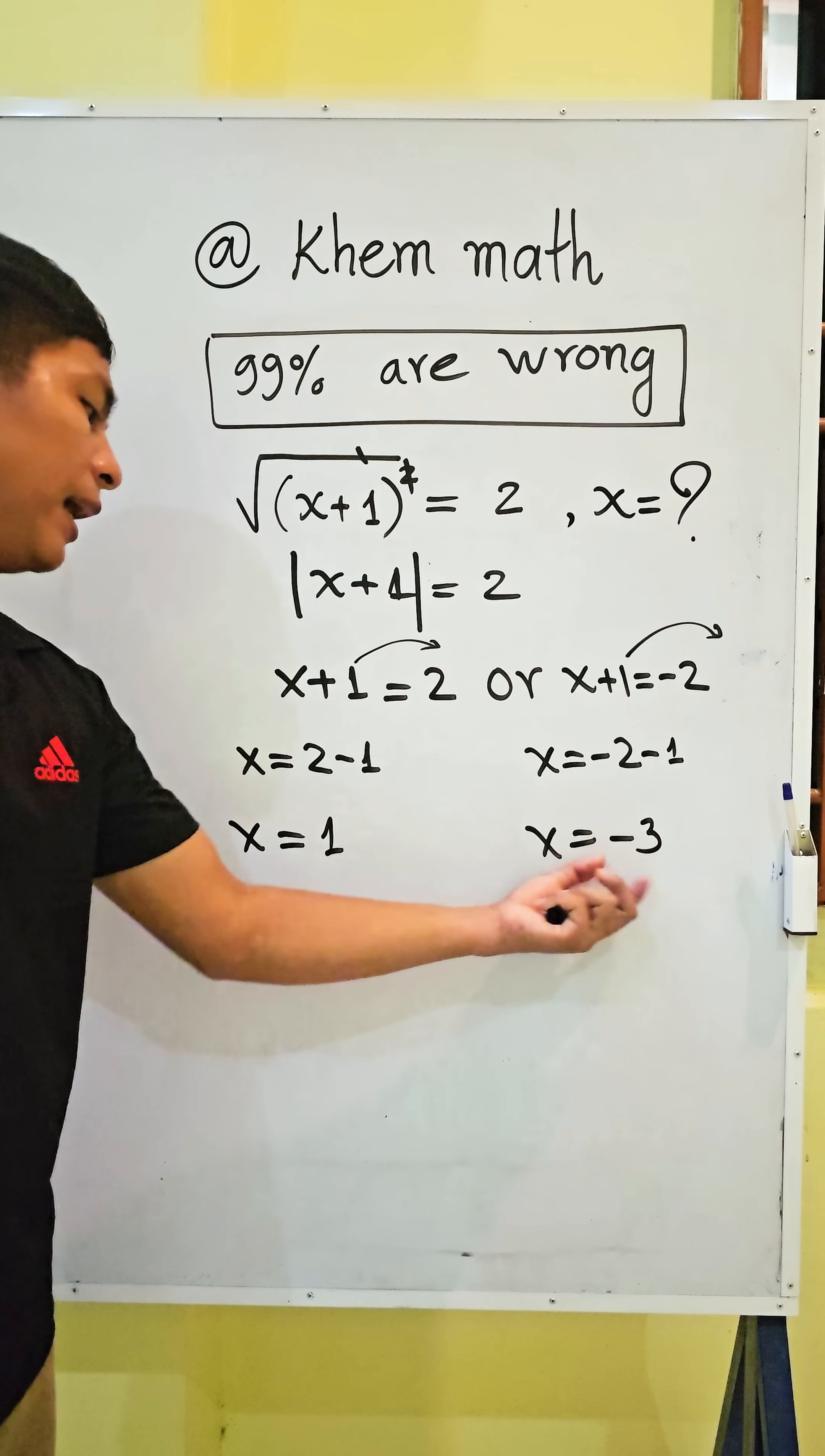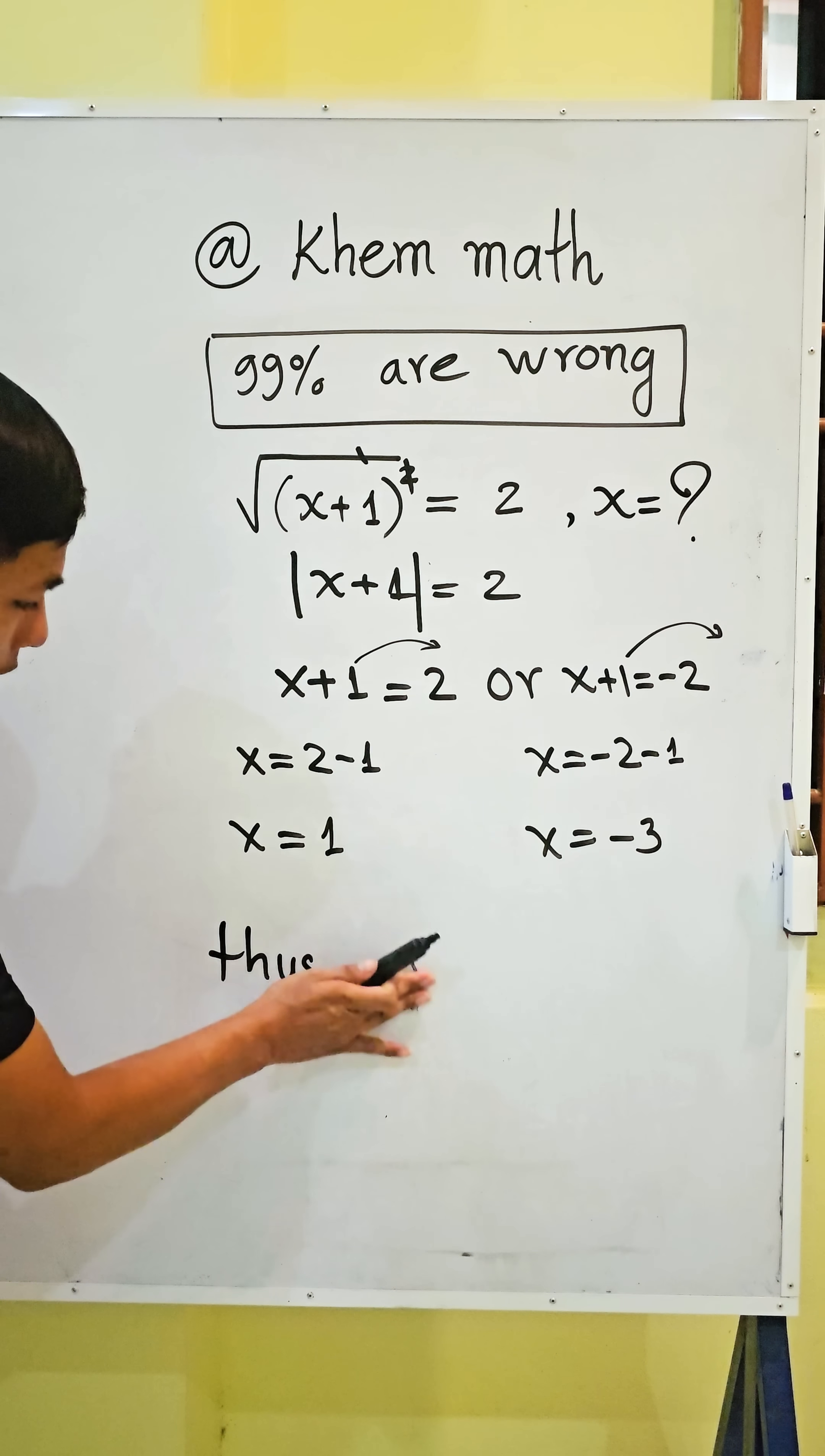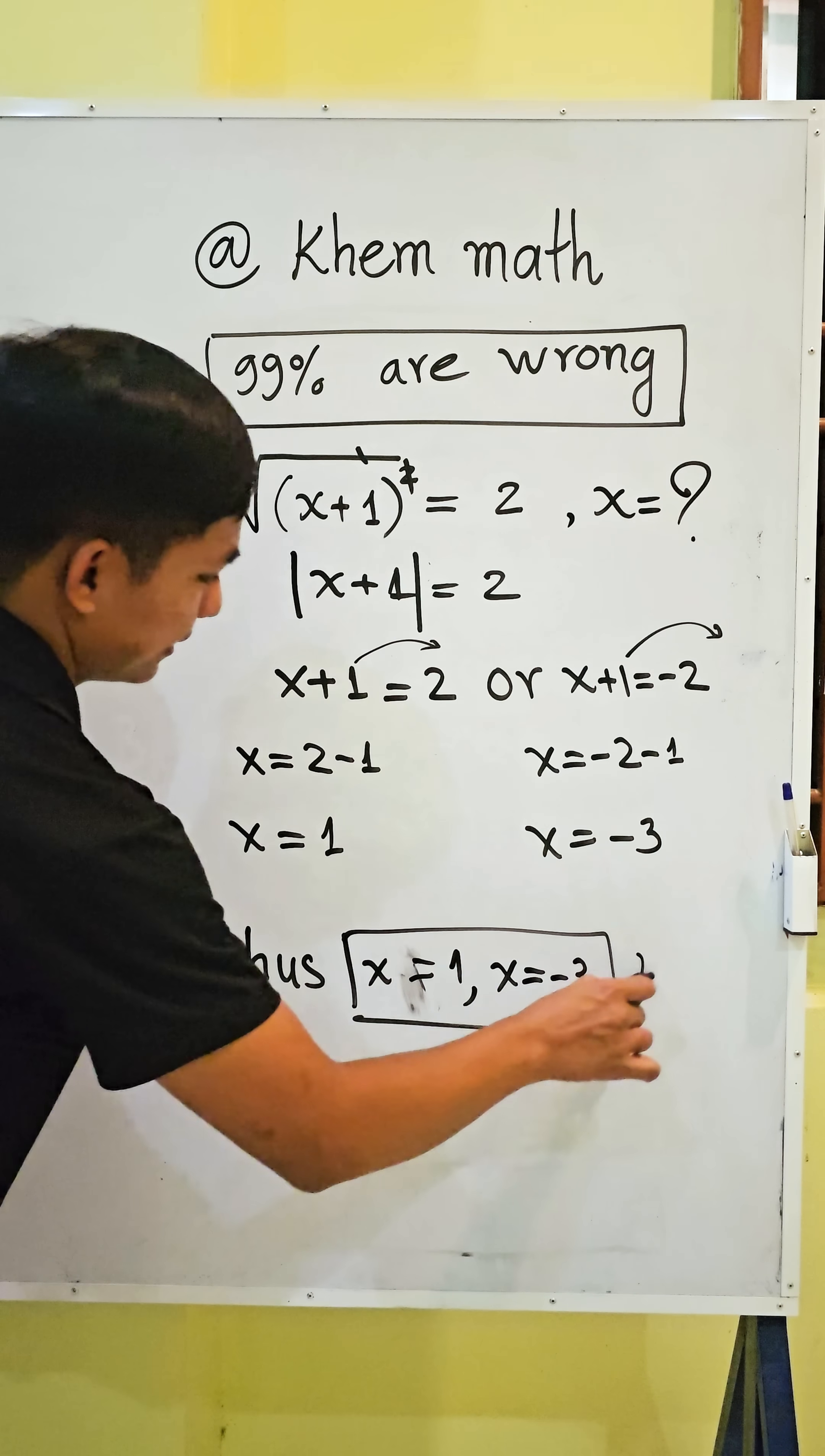So we get the value of x have two values, equal 1 and equal negative 3. So now, thus, x equal 1 and x equal negative 3 is our answer. All right.